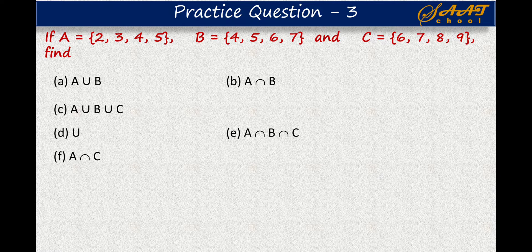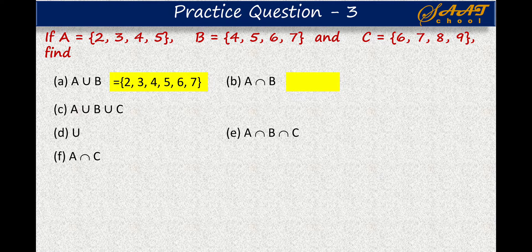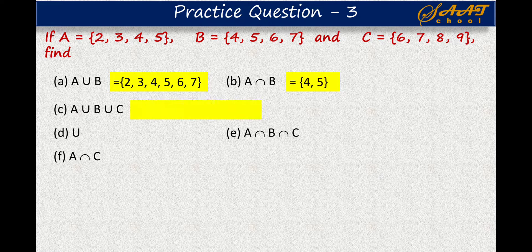I hope you managed to solve these. The first is A union B. We know the union of A and B is the set of all elements from set A and set B. Here A union B is {2, 3, 4, 5, 6, 7}. Note that 4 and 5 are common elements, and we write them only once. Next, A intersection B: the intersection of two sets contains those elements which are present in both set A and set B. Simply, the intersection is the set of common elements, and here the common elements are 4 and 5. So A intersection B is {4, 5}.